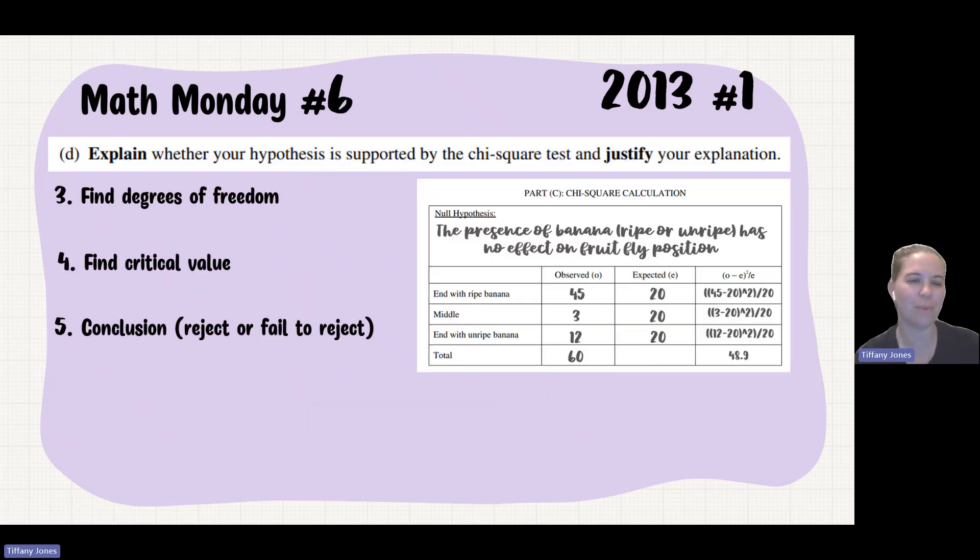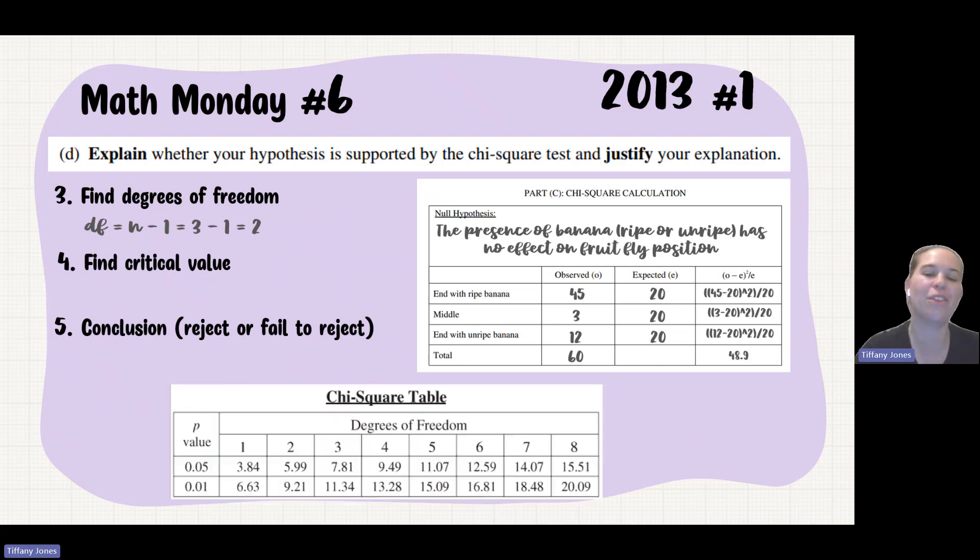With this, we now need to figure out what does this say about our chi-square. The first thing we have to do is come up with our degrees of freedom. We've got three different groups: the end with the ripe banana, the middle, and the end with the unripe banana. So we're going to do 3 minus 1, which gives us 2, so it'll be 2 degrees of freedom. We then look at our chi-square table to see what is our critical value. Since we're looking at 2 degrees of freedom, a p-value of 0.05, that means it's going to be 5.99.